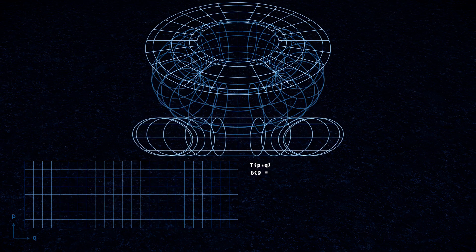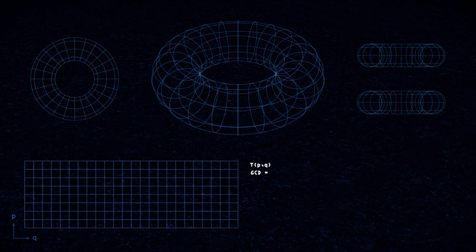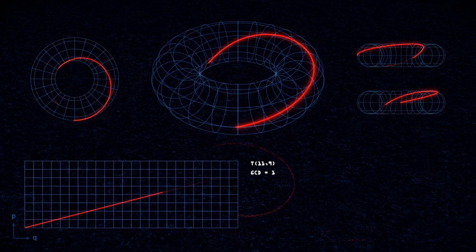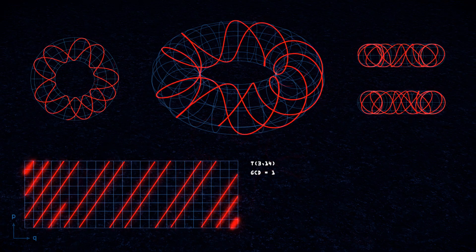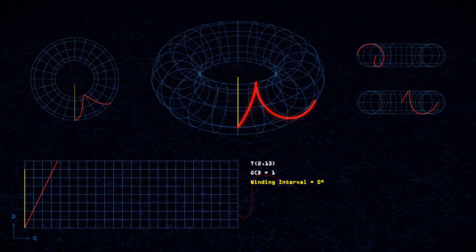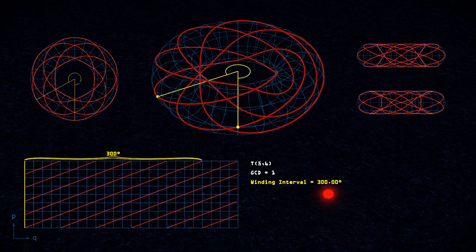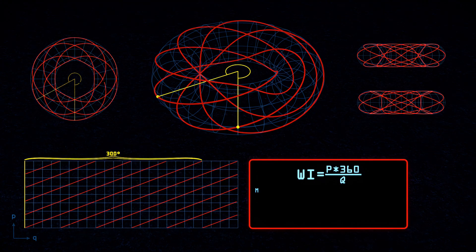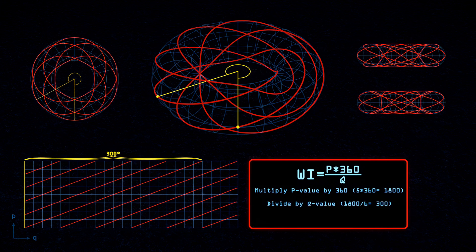Another way to look at torus knots is by plotting their orthographic projections, which is basically looking at them from the top, front, and side views. The higher the numbers, the more intricate the geometries get, but as long as p and q are relatively prime it will always end up as a single torus knot. One of the measurements we can take from a torus knot is the winding interval — the angle in degrees between each pass over the equator of the torus. Take the torus knot 5-6. We can calculate its winding interval in degrees with the following formula: when we multiply our p-value by 360 degrees, we get the total amount of degrees covered by the entire knot. Then dividing by our q-value gives the degrees between each pass over the equator. In this case, we get a winding interval of 300 degrees.